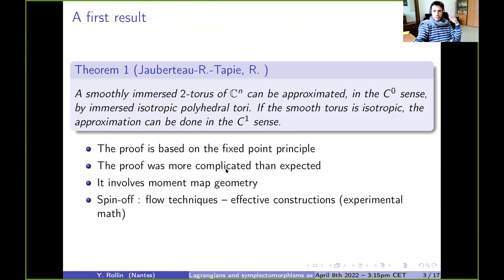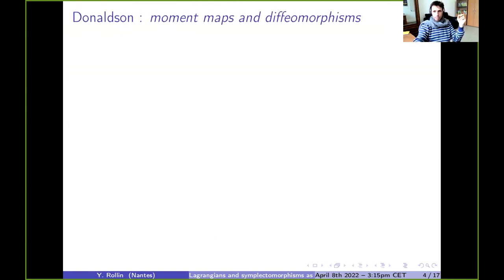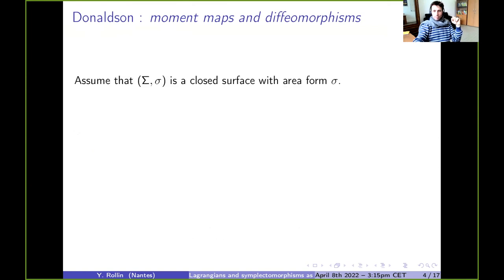The ideas of the proof and the moment map come from Donaldson's paper 'Moment Maps and Diffeomorphisms.' For a long time I thought these ideas are really nice — it would be great if I could use them somewhere. And here we go.